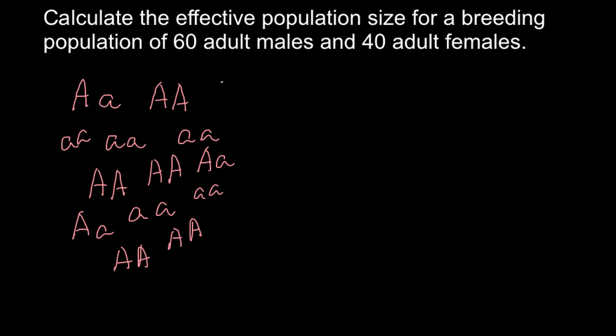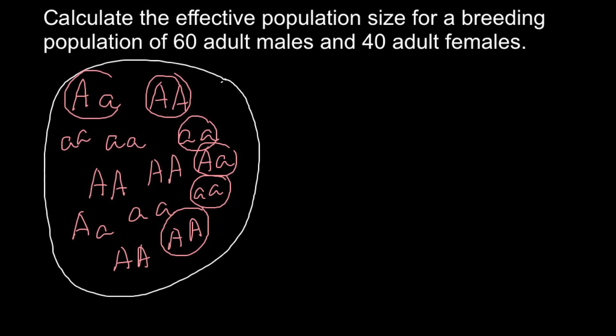All these people here we will circle and we would call them gene pool. Let me circle each individual, so you would know that each genotype represents one individual. And we call such a gene pool census population. We use Nc.